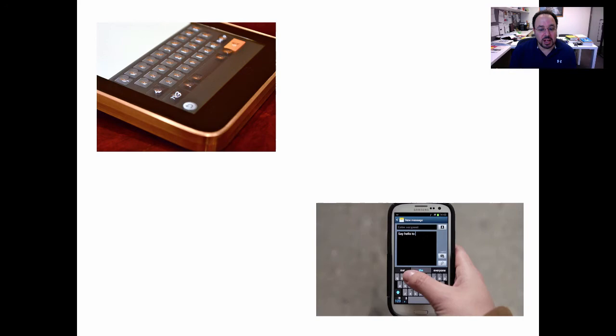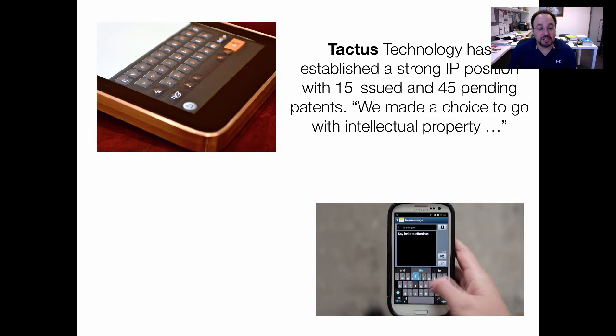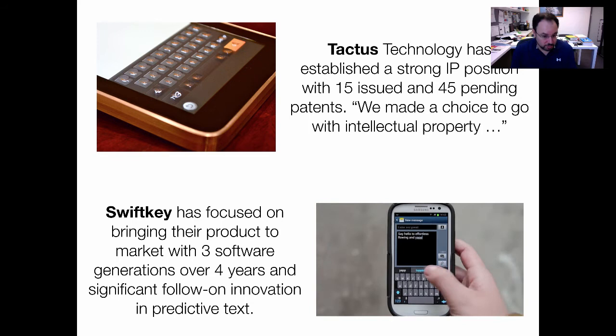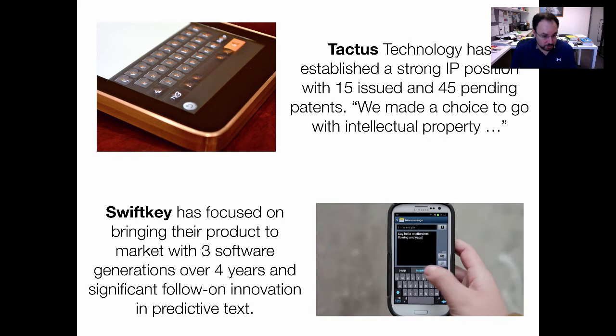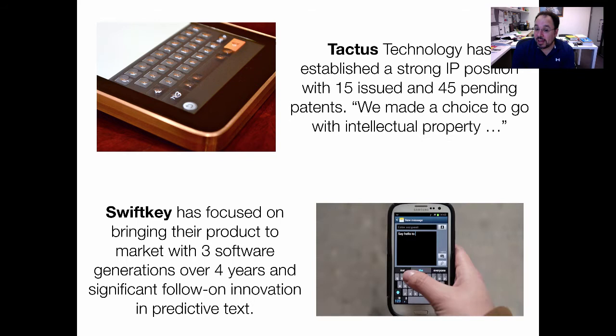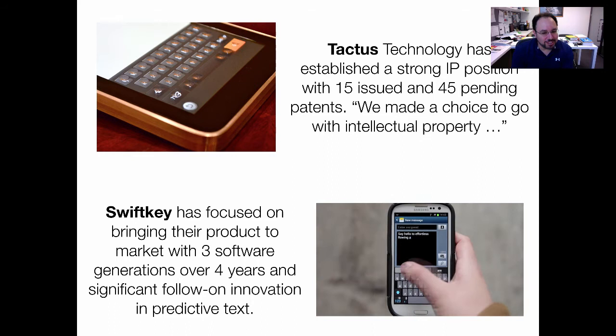What have Tactus and SwiftKey done? Tactus went for IP protection — 15 issued patents, 45 pending at the time. They made the choice to go with intellectual property. SwiftKey, on the other hand, focused on bringing their product to market: three or more software generations over four years with significant follow-on innovation. They weren't worrying about patents — they were focused on getting to market quickly, experimenting, and learning. This is a common approach for AI companies that rely on interacting with humans to gather data.